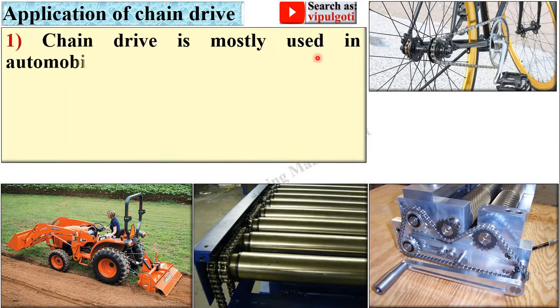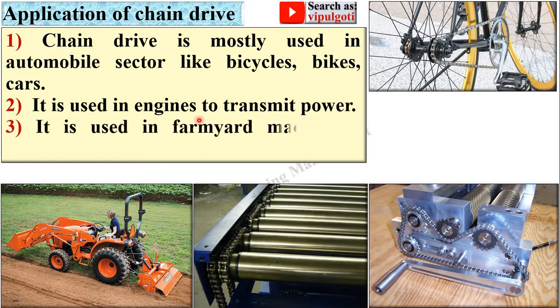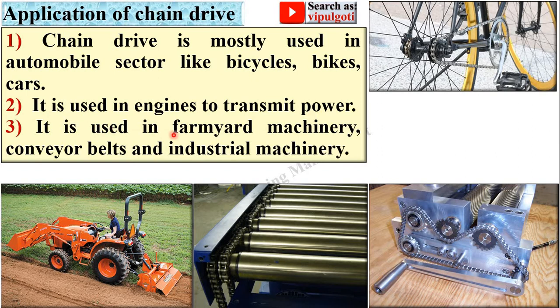The chain drive is mostly used in automobile sectors like bicycles, bikes, cars, etc. It is used in engines to transmit power. It is used in farmyard machinery, conveyor belts and industrial machinery.